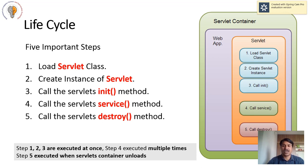Then there comes the service method. After initialization, it calls the servlet service method to respond to the client. Then it destroys the servlet's request and response, and the servlet gets destroyed using the destroy method. Importantly, steps one, two, and three are executed only once, whereas step four — the service method — is executed multiple times. Step five, destroy, is executed only once.